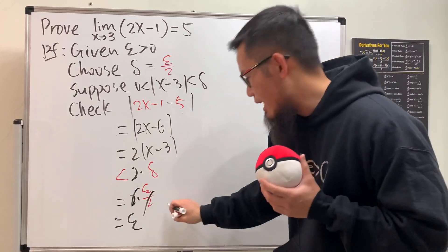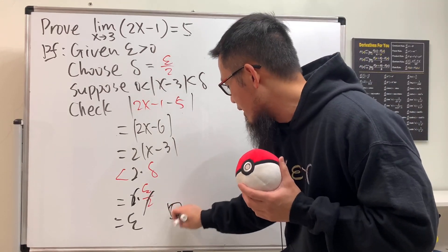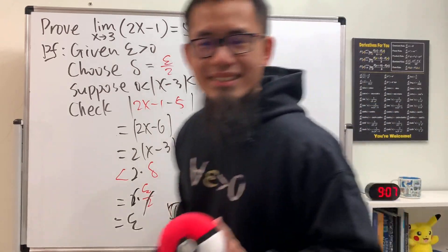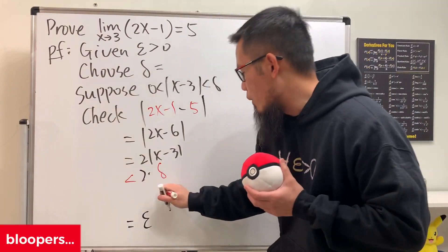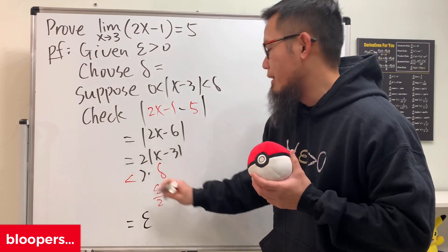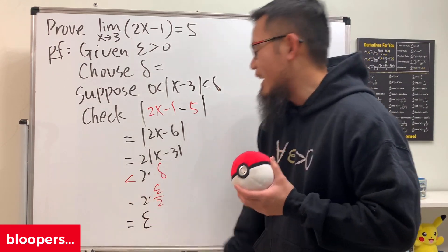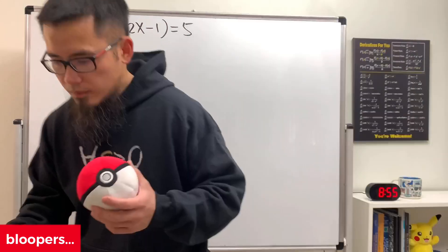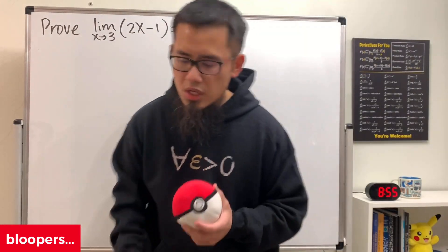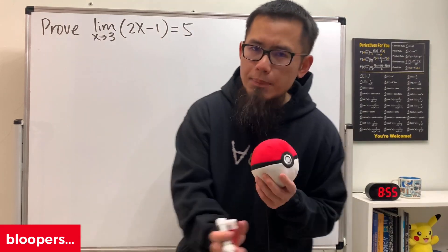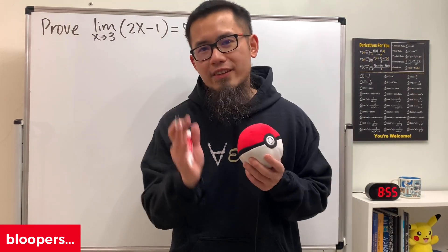So come back and put down delta equals epsilon over 2, and we are done. Put the box right here. Delta should equal epsilon over 2.